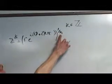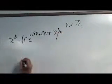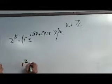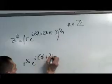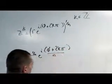So, once again, manipulating the exponents correctly. This is r to the 1 over n, e to the i theta plus 2k pi divided by n.